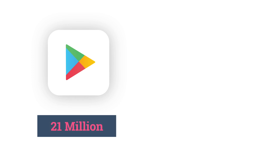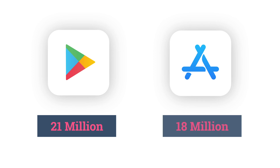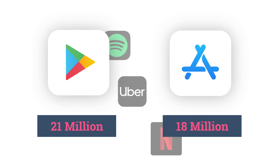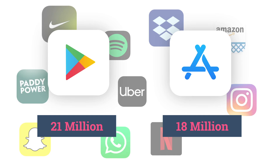So where should you start? The first thing you should do when thinking about mobile push notifications is clearly define the goal of your app. At the start of 2019, the Google Play App Store had 21 million apps available to download, and the Apple App Store wasn't far behind with 18 million. So when people say there's an app for everything, they're not joking.